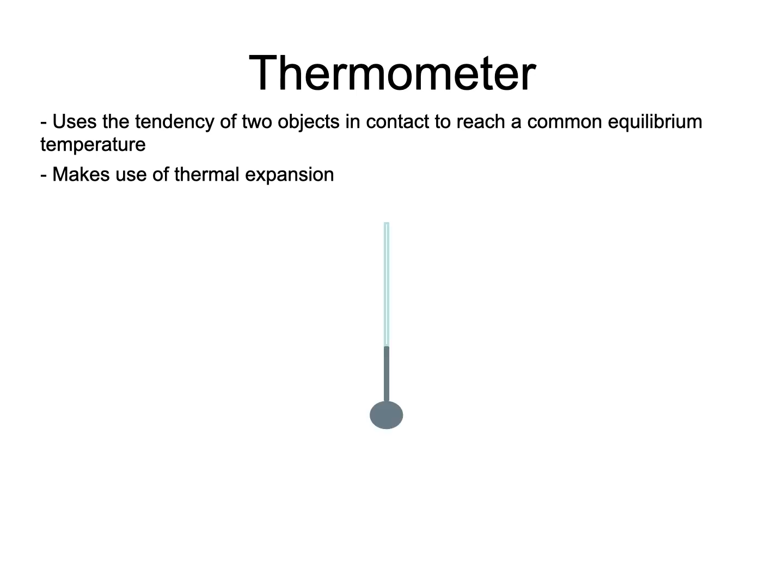Being a thin column, the change in volume can be seen in the change of height of the mercury column. He marked the lowest height when the thermometer was in contact with a solution of melting ice water and ammonium chloride. The height of the mercury when in contact with a healthy human body was said to be exactly 96 degrees Fahrenheit.